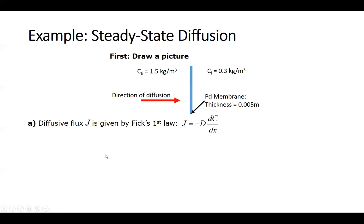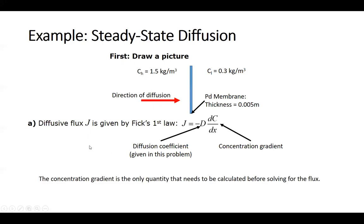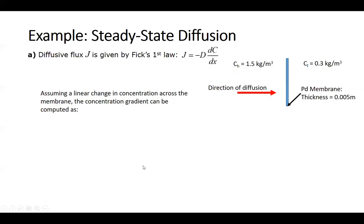We know from Fick's first law that the diffusive flux J is going to be given simply by negative of the diffusion coefficient D times the concentration gradient, which is given by dC/dx. The only thing that's needed to be calculated here is the concentration gradient because the diffusion coefficient is already given in the problem.